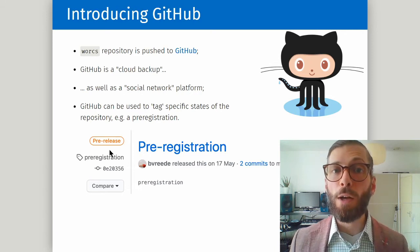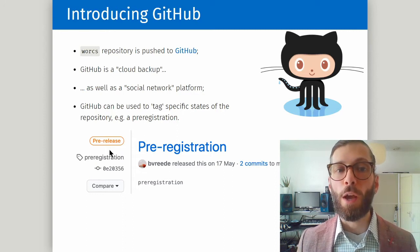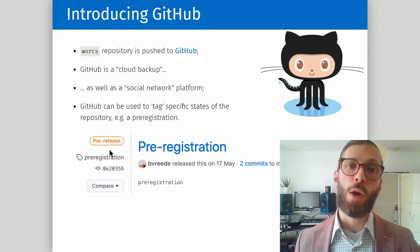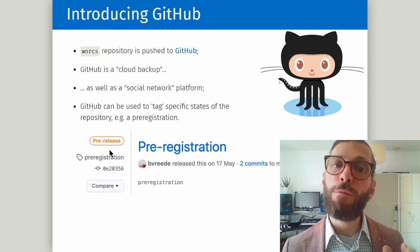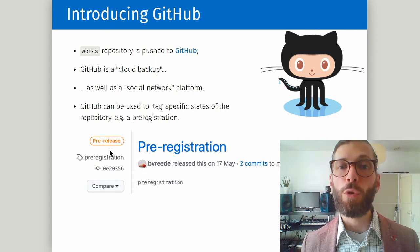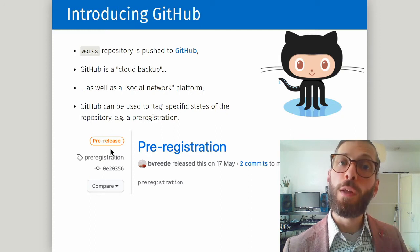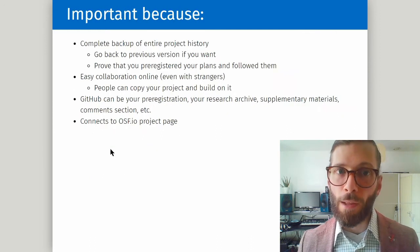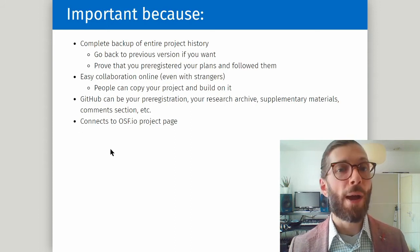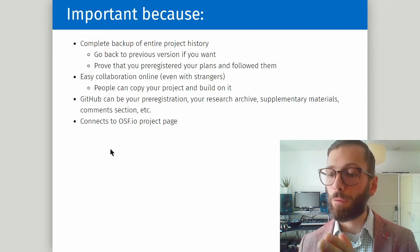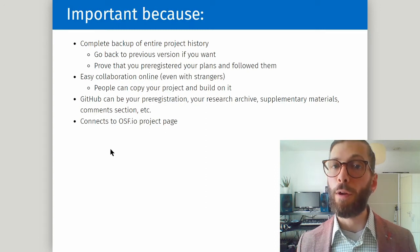Git is usually combined with GitHub. GitHub is a cloud backup of a Git project, but it also has social networking abilities — you can comment on people's projects, copy their projects and build upon them. Moreover, you can tag specific historical versions of your project; for example, you could mark the point at which you finished a pre-registration and go through the entire history of your project. This is important because you can have a complete backup of the project history, go back to any previous version, and prove that all the steps you took from the pre-registration were intended to follow through with your pre-registration plans.